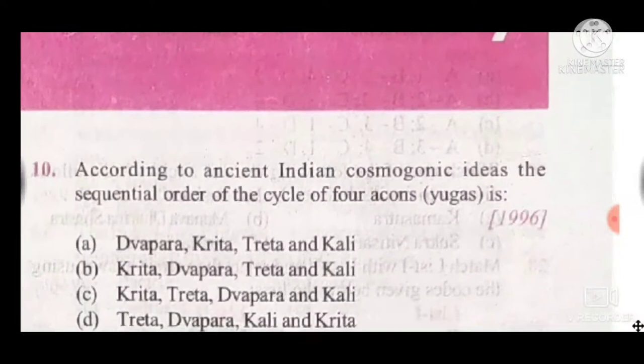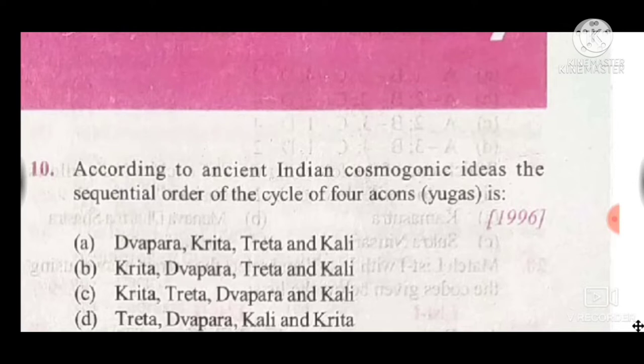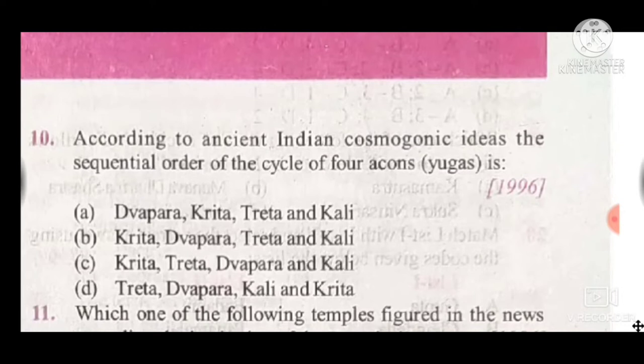Question 10: According to ancient Indian cosmogenic ideas, the sequential order of the four yugas is — the correct answer is Krita, Treta, Dvapara, and Kali.